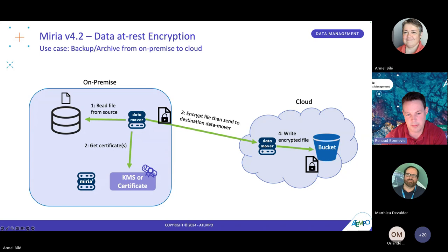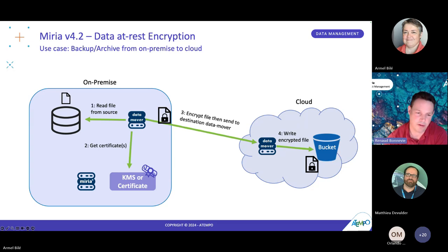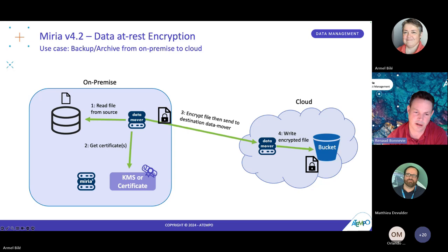There is also the ability to have rotation of encryption keys, done automatically for every seven gigabytes of data. This is a configurable option applied by following best practices of the market, specifically NIST. The data will be encrypted at the source data mover and then sent to the target data mover and directly written into the bucket. On top of that, protecting data in transit with our advanced network layer enables complete end-to-end encryption.